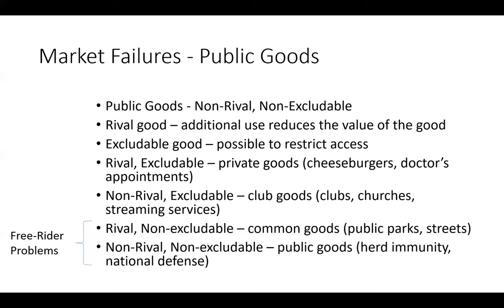A rival good — my example: Sean has a cheeseburger. If I also try to eat the cheeseburger, there's less cheeseburger for Sean and me. Cheeseburgers are a rival good because additional users of the good reduce the quality or volume available to other users. An excludable good is a good that you can restrict access to — a cheeseburger is also excludable in the sense that Sean could say, if you try to touch my cheeseburger, I'm going to punch you in the face.